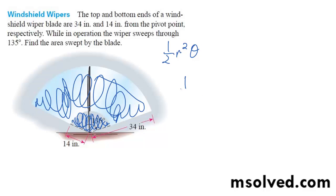So the whole area is going to be 1 half, and then the radius, which is equal to 34 squared times the angle. And in this case, it is 135 degrees. Okay, so we have radians, so it's 135 times pi over 180, which simplifies down to 3 pi over 4.